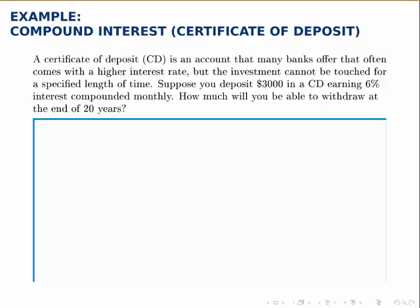Suppose you deposit $3,000 in a CD that earns 6% interest, and this interest is compounded monthly. How much will you be able to withdraw at the end of 20 years?